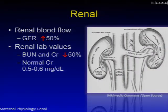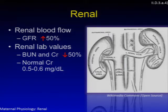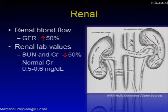Renal changes in pregnancy: there is an increase in renal blood flow, translating to an increase in GFR by 50%. As a result, renal lab values will be decreased — BUN and creatinine down by 50%. A normal creatinine in pregnancy is about 0.5 to 0.6. This becomes important because if you see a creatinine of 0.7 to 0.9 in a woman at risk for preeclampsia, while it may look normal on your lab sheets, it is actually abnormal for pregnancy and may indicate renal injury risk.